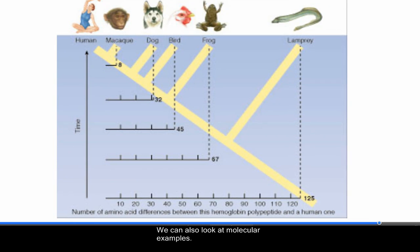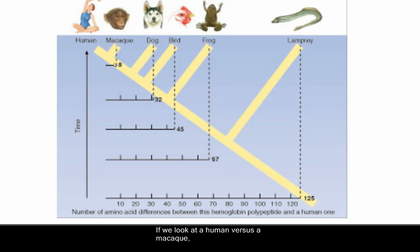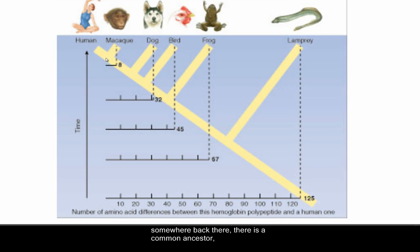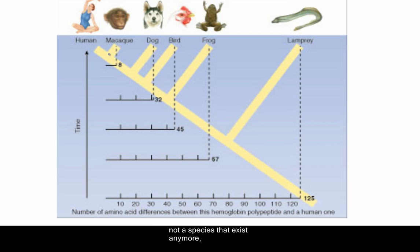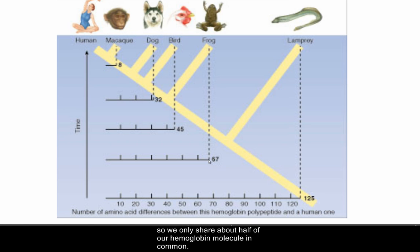We can also look at molecular homologies. For example, the amino acid differences in hemoglobin — the protein that carries oxygen in your blood. Comparing human versus macaque, there are only eight amino acid differences in a protein of about 148 amino acids. That suggests a relatively recent common ancestor. Dogs and humans have 32 differences, meaning our common ancestor is farther back in time. A frog has 67 differences with our hemoglobin, so we only share about half the molecule, going back even farther in geologic time. This is all evidence of common ancestry.